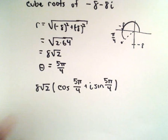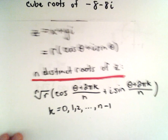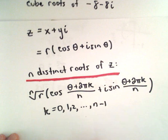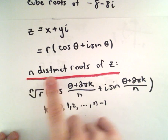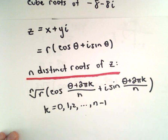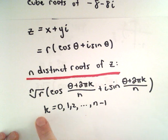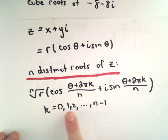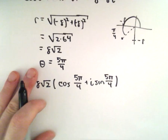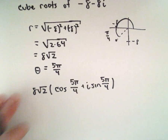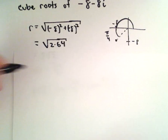Now we've got our trigonometric form. We're just going to find the three distinct roots of our complex number by using this formula. We'll let k equal 0, 1, and 2, and start running through the cases.